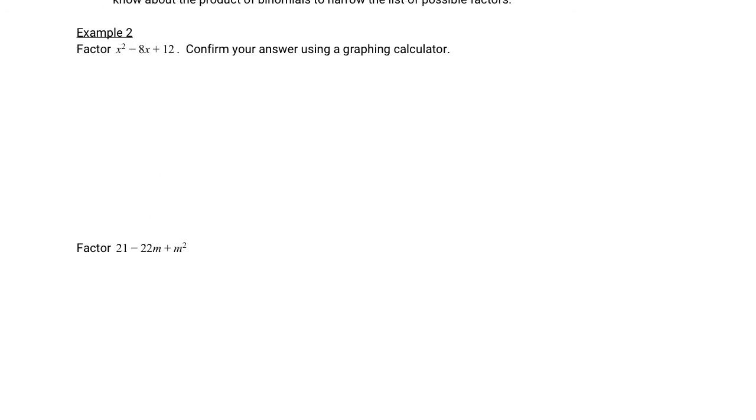Try another one. Now in this one, our b is a negative number. We've got a equals 1, b is negative 8, and c is positive 12. This says confirm using a graphing calculator. Don't do that. Confirm using the FOIL method.